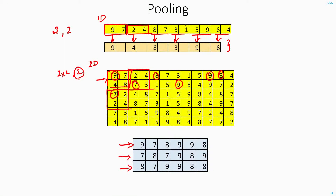In the first example, you have an input array of size 12. After pooling it reduces to 6. In the 2D case, you have an input array of 6 by 12, and after pooling it reduces to half — that is, 3 by 6. This is how pooling is typically done, and most of the time the size of your feature map will reduce to half.